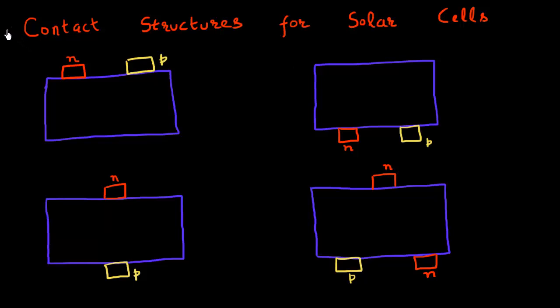For every solar cell, we need at least a minimum of two contacts. We need a contact to collect the electrons and we need a contact to collect the holes.